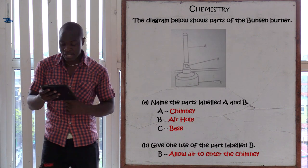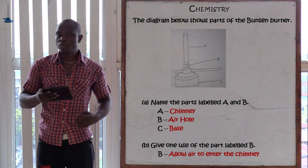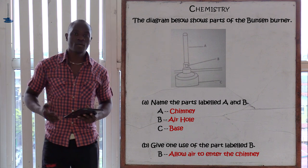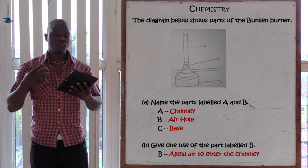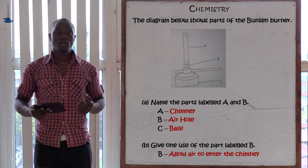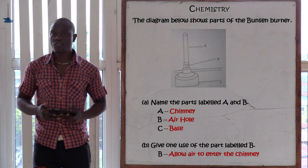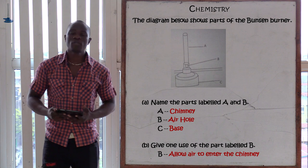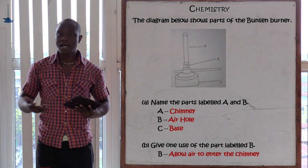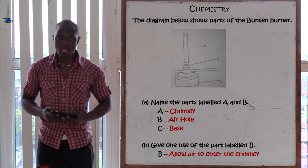The next question, which is letter B, is asking: give one use of the part labeled B. The use of the air hole is to allow the free flowing air from the laboratory to be able to mix freely with the gas in order to complete the combustion of the flame. So the function of part B is to allow free flowing air to enter into the chimney and therefore complete combustion for the flame produced by the Bunsen burner.